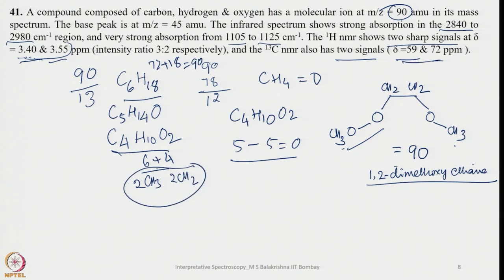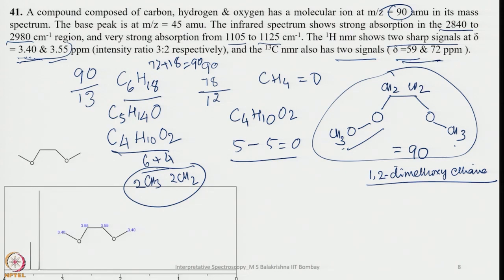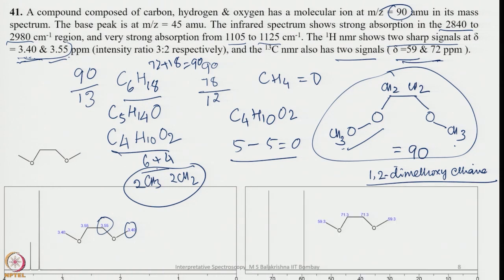Looking at the 1H NMR, we see two signals — one at 3.40 and another at 3.55 ppm. The 3.55 signal is for the methylene group and 3.40 is for the methyl group. The 13C NMR also shows two signals: one around 59 ppm and another at 72 ppm. This proves beyond any doubt that the data correspond to 1,2-dimethoxyethane — that is the compound being identified.